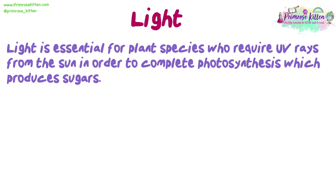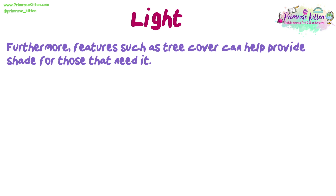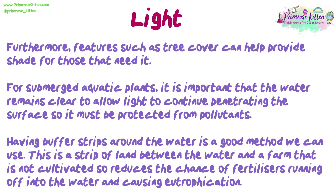Light is essential for plant species who require UV rays from the sun in order to complete photosynthesis, which produces sugars. Some animal species may rely on light in order to see prey species or recognise potential mates. The location of the habitat will be essential in ensuring they get enough sunlight — for example, the poles receive much less than the equator. Furthermore, features such as tree cover can help provide shade for those that need it. For submerged aquatic plants, it is important that the water remains clear to allow light to continue penetrating the surface, so it must be protected from pollutants. Having buffer strips around the water is a good method — this is a strip of land between the water and a farm that is not cultivated, so it reduces the chance of fertilisers running off into the water and causing eutrophication.